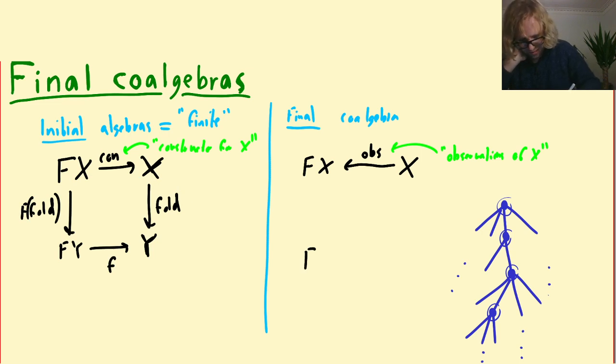Which means that if I have another thing, F of Y, Y, some way of observing that Y, then we should get a map into X. So before we had a map out of X, but now we have a map into X instead. And this is usually called the unfold of F, this was called the fold. And again, we want this to preserve the structure, so we still want that this diagram should commute.